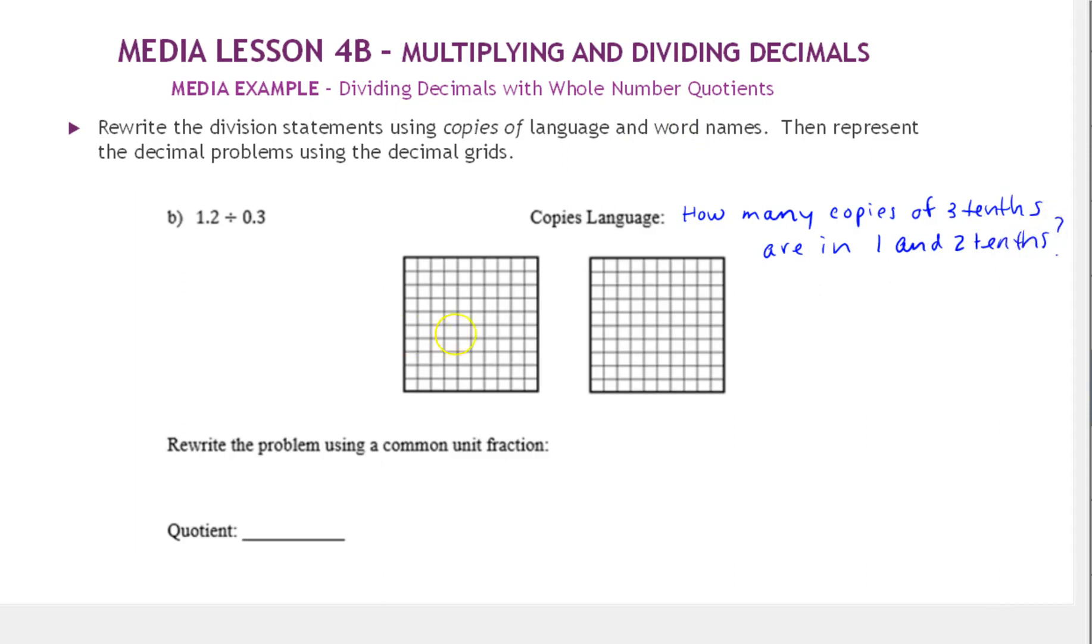So let's start by using the grid to make 1 and 2 tenths. I'm going to use light blue to cover in the whole first one. So this is 1. And then we have 2 tenths more so I'll make 2 orange strips.